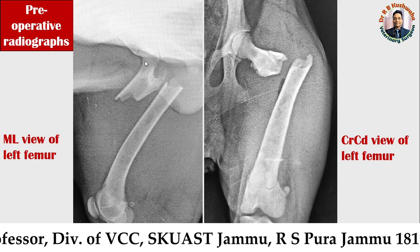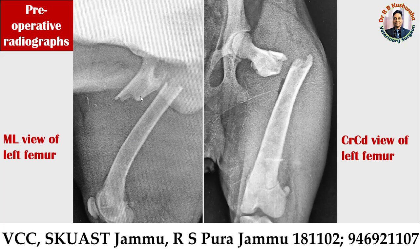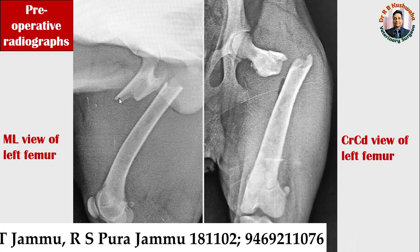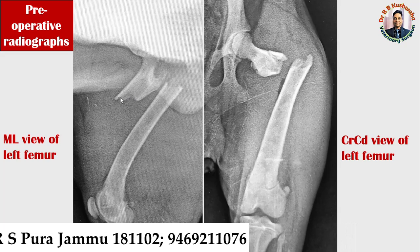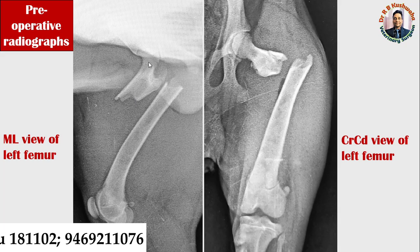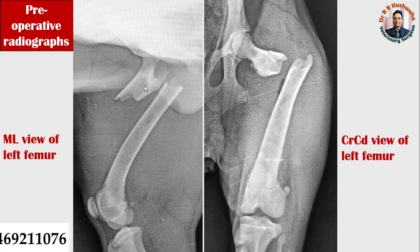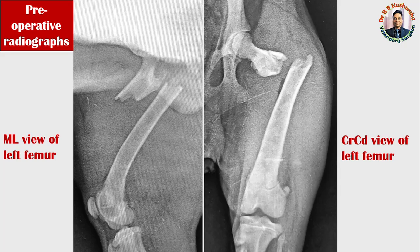If you see carefully in the mediolateral view of the left femur, you can see the fracture fragment — it is an almost inverted L-shaped fracture. This fracture is located at the proximal extremity, so we can say this is the proximal one-third fracture of the left femur. Since the fracture is located in the metaphyseal region, we can also call this a metaphyseal fracture, located just below the greater trochanter. The greater trochanter, the neck of the femur bone, and the head are visible, and this fracture is located below the trochanter — so such a fracture can also be classified as a subtrochanteric fracture.